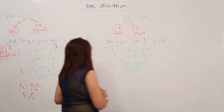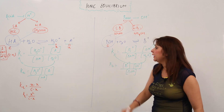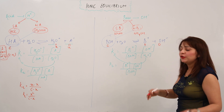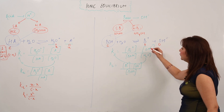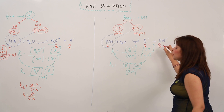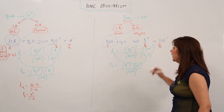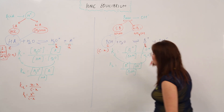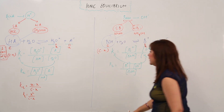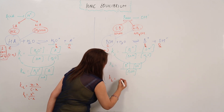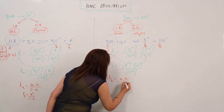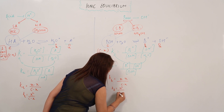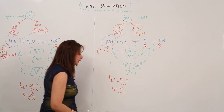Similarly, I am doing it for the base. Suppose the initial concentration of base BOH is C, and the initial concentrations of B⁺ and OH⁻ are 0. At equilibrium, the concentration of B⁺ is X and OH⁻ is X, then the BOH concentration is C − X. Putting these values in: Kb = X² / (C − X).